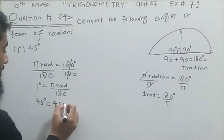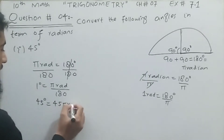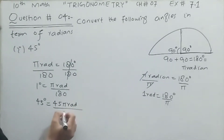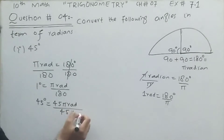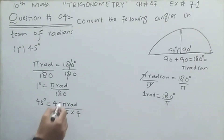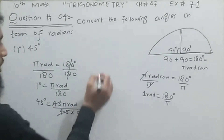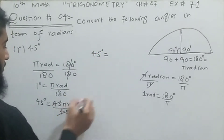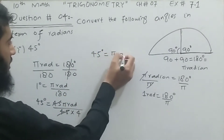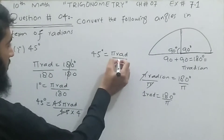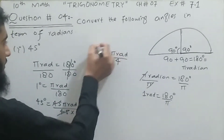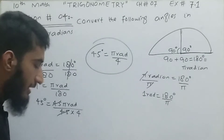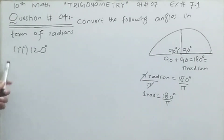So 45 degrees will be equal to 45π radian divided by 180. This can be written as 45 multiplied by 4 gives us 180, so 45 cancels with 45, and we are left with 45 degrees equal to π radian divided by 4. So 45 degrees equals π/4 in terms of radian. This is the required result.